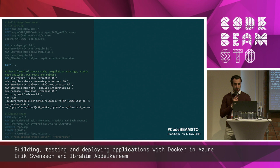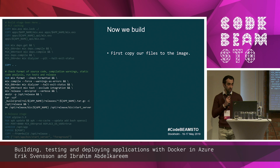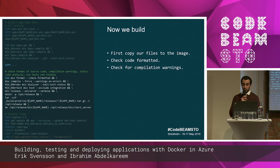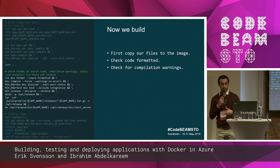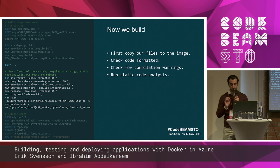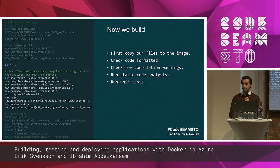Then we start building our solution. We copy our files — `COPY . .` means copy everything in the working directory to the Docker image. Afterwards we check if our code is formatted using `mix format --check-formatted`, because we decided code must be formatted to be integrated. Then we compile with warnings as errors — we don't want any warnings to be integrated. We run the static code analysis to hunt for mistakes or code smells, run our unit tests, and then package a release.